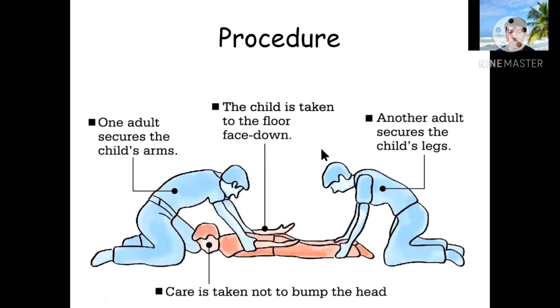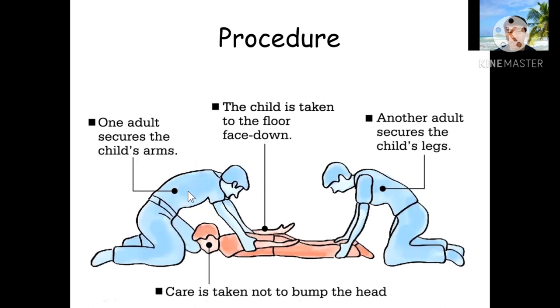Here is the procedure for how the restraint works. As you can see, the child is taken to the floor face down. Make sure there is a cushion on the floor — a mattress or rubber mat — and a pillow to ensure the child will not get hurt. The clinician secures the arms of the person with autism with two hands, and an assistant secures the legs. This position is maintained until the child has calmed down.